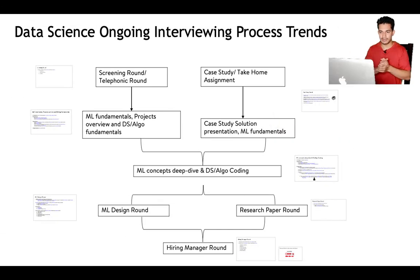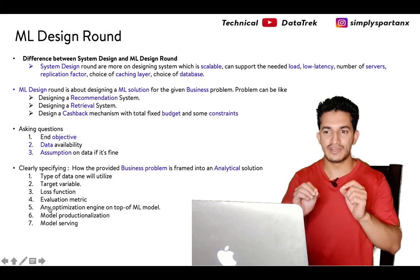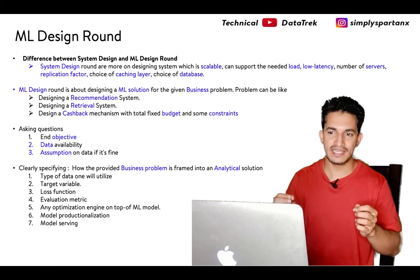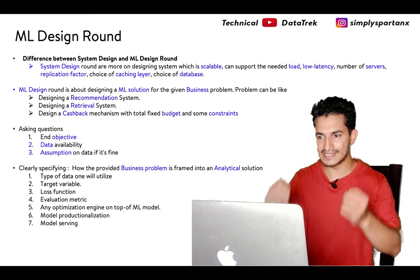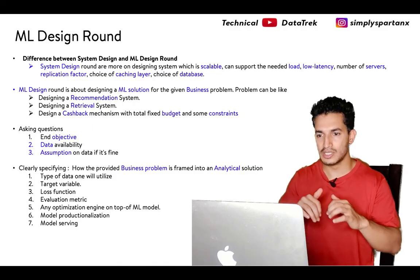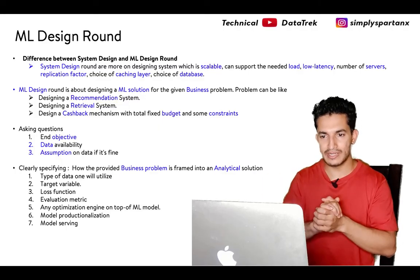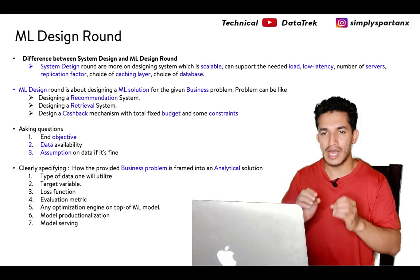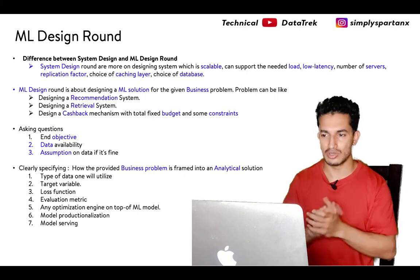Once these rounds — ML concept deep dive, DS/Algo, and fundamentals — are completed, many companies have an ML design round. It's important to differentiate this from a system design round. System design rounds are mostly for software or ML engineers and focus on creating a scalable system with low latency, server replication, caching layer, and database choices. The ML design round is different — it's about how you can frame a business problem into an ML or analytical solution.